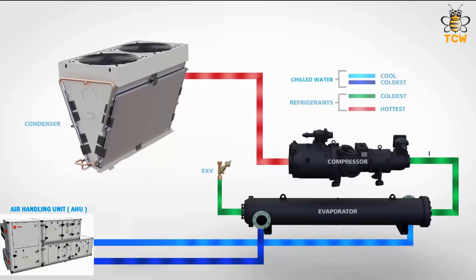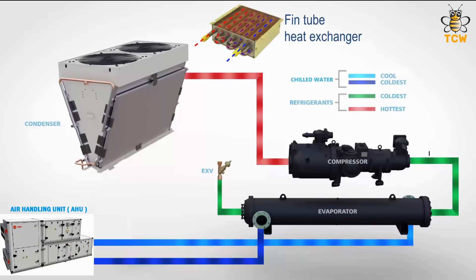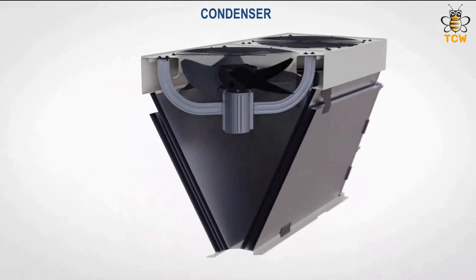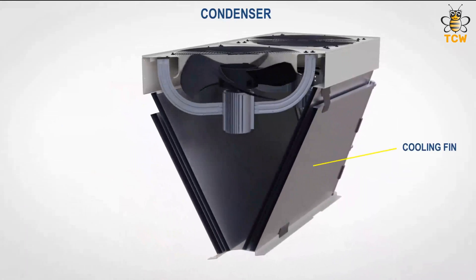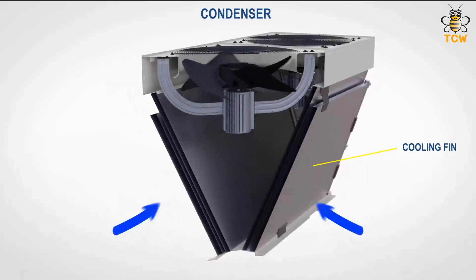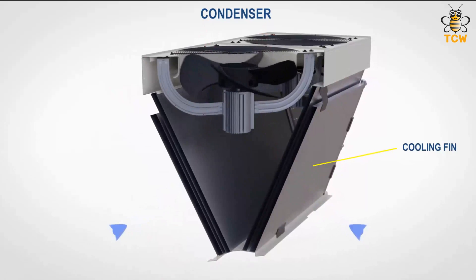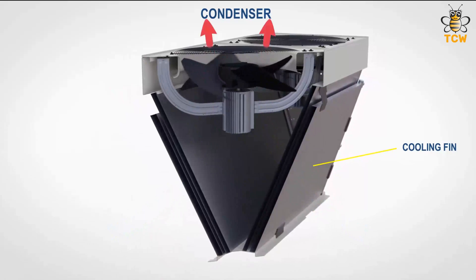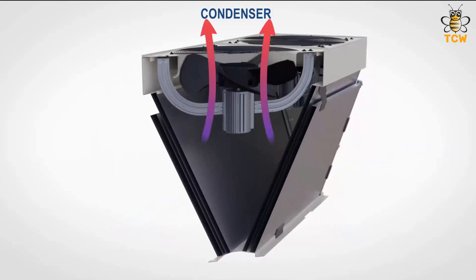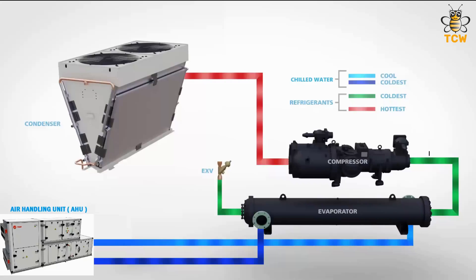This hot refrigerant vapor is blown into the condenser. In the condenser, the high temperature refrigerant vapor is passed through a thin tube heat exchanger. When the high temperature refrigerant vapor flows inside the tubing, the fan sucks air in the inner cavity, causing air to flow through the cooling fins. The air passing through the cooling fins will absorb the heat from the refrigerant vapor, making the temperature of the refrigerant vapor drop.